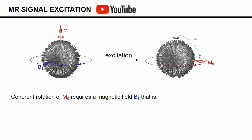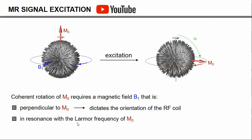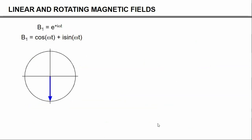So, the coherent rotation of the magnetization requires a magnetic field B1 that is perpendicular to M0, and this ultimately dictates the orientation of the radio frequency coil that will produce the radio frequency pulses, and it requires the B1 field to be in resonance with the Larmor frequency of the spins. In other words, B1 is a magnetic field that rotates at the Larmor frequency.